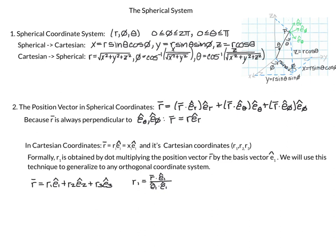So the generalization from the cylindrical coordinate video is that r is written as a first coordinate times the first basis vector, plus a second coordinate times the second basis vector, plus a third coordinate times the third basis vector. To get each coordinate, we dot r by the corresponding basis vector; since the basis vectors have unit length, we divide by 1.